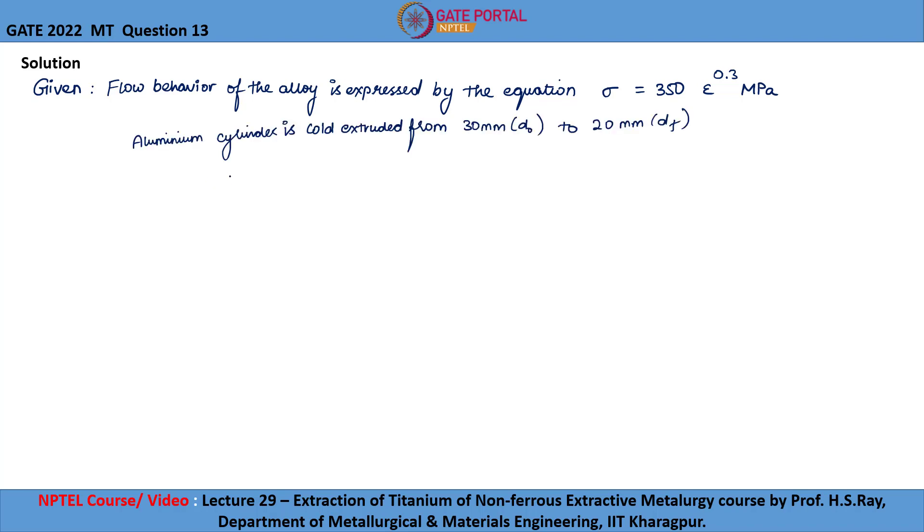The aluminum cylinder is cold extruded from 30 mm, let's take it as d naught, to 20 mm, let's take it as df. Let us now look at the formula.